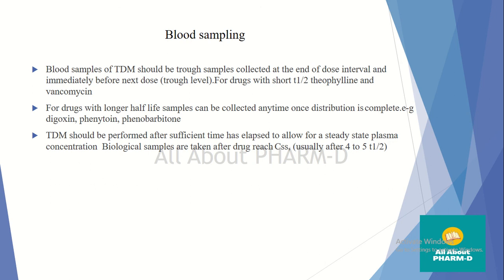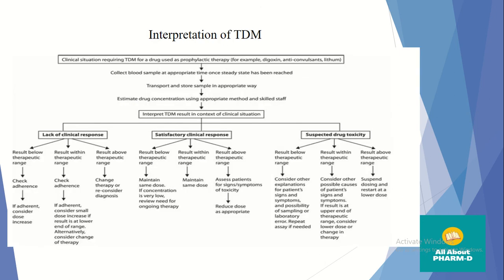To interpret TDM results — for example for Digoxin, anticonvulsants, and Lithium — first collect the blood sample at the appropriate time once steady state has been achieved. Then transport and store the sample correctly, estimate the drug concentration using skilled staff, and interpret TDM in the context of the clinical situation. Three categories of clinical response are considered: lack of clinical response or no effect, satisfactory response, and suspected toxic response.